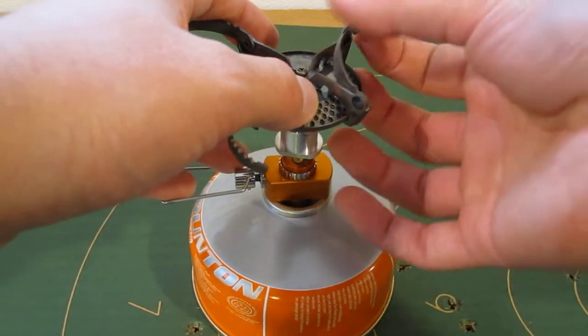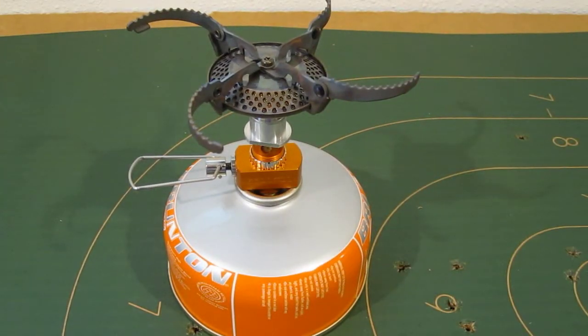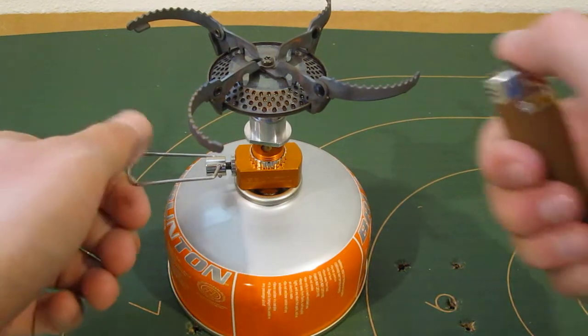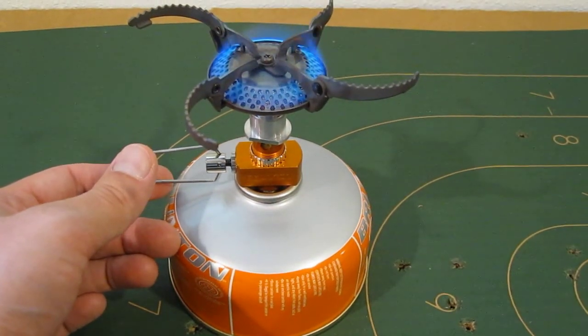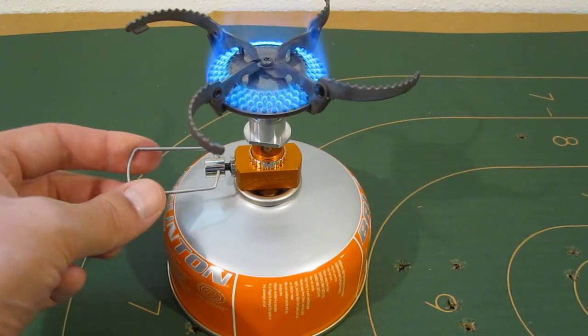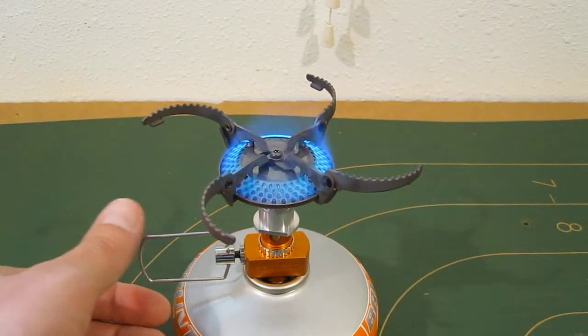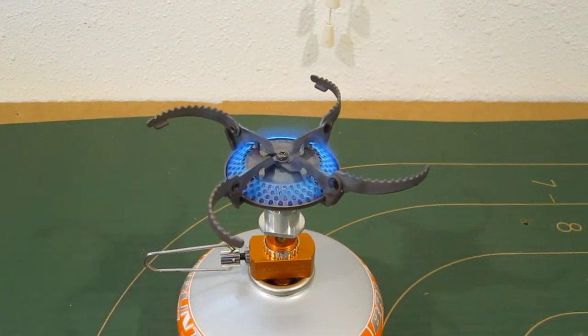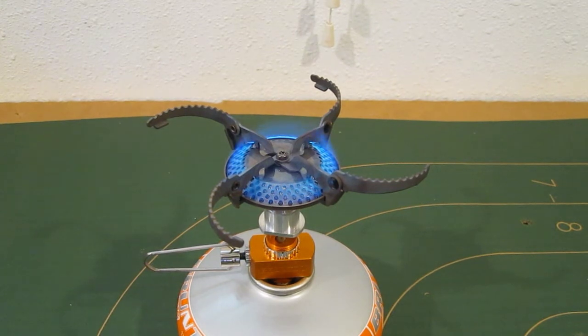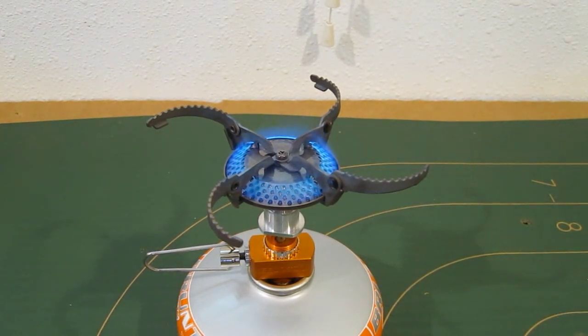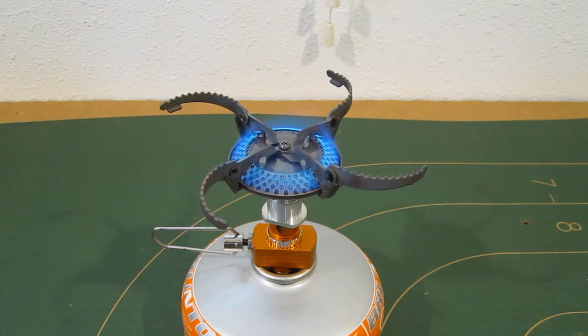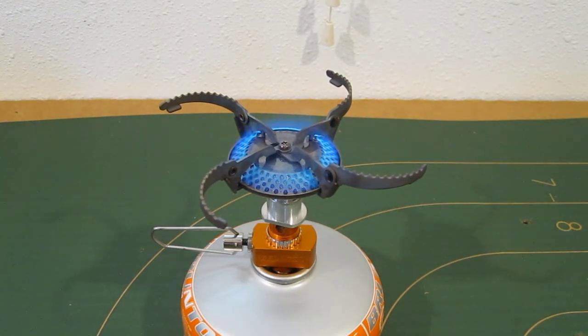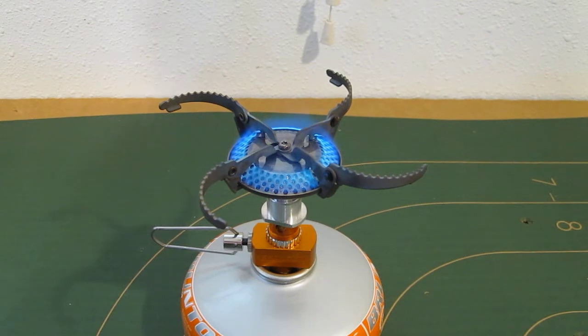Alright, you can light this with a ferro rod most of the time, just use my lighter. You can see we get some pretty good flame there, you have pretty decent control. I don't know how much fuel is actually left in this canister so we'll find out here. We're going to use the small Brunton IB cook set, let me get some water put in there. Actually using that Platypus Plus bottle.